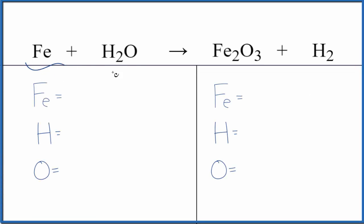Let's balance the equation Fe plus H2O gives us Fe2O3 plus H2. We have iron metal, water, this iron oxide, and hydrogen gas.